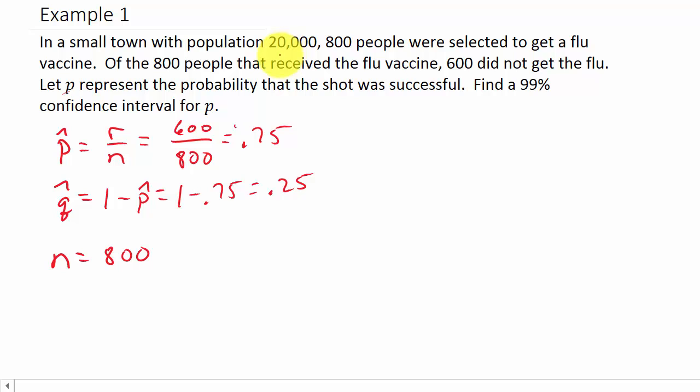That's the total number of people that received the flu vaccine. The 20,000 doesn't really mean anything in this problem. That's just telling you there were 20,000 people in the town. We pulled 800 of them out and tested just those 800 with the flu vaccine.